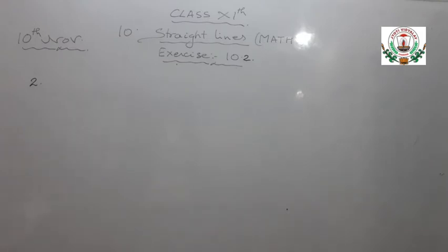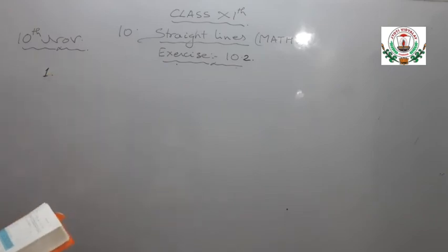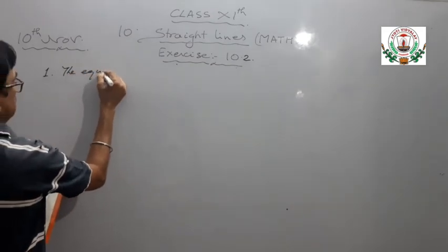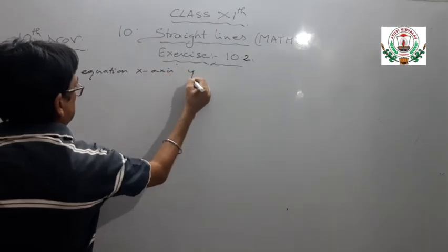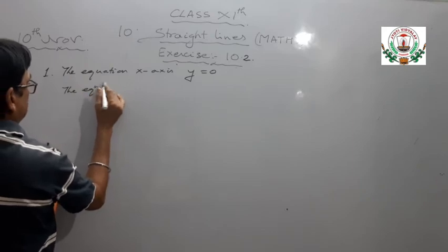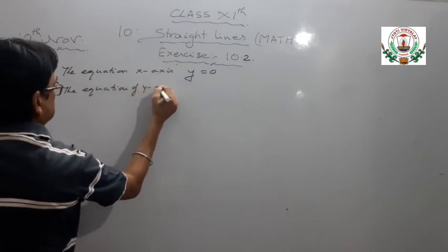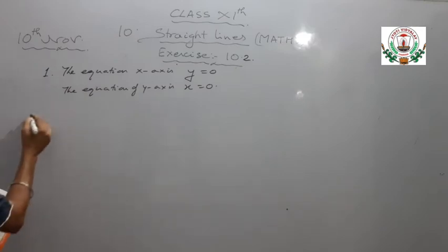Now let's start with exercise 10.2. The first question: write the equation for the X-axis and Y-axis. The equation of the X-axis is given by Y equals 0, and the equation of the Y-axis is given by X equals 0.